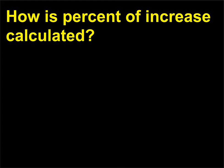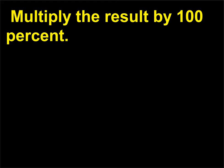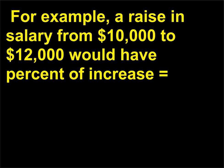How is percent of increase calculated? To find the percent of increase, divide the amount of increase by the base amount. Multiply the result by 100%. For example, a raise in salary from $10,000 to $12,000 would yield a percent of increase calculated as: (2,000 / 10,000) × 100% = 20%.